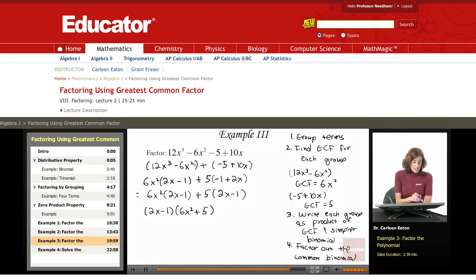So the factorization of this polynomial with four terms was achieved by first grouping the first two and the second two terms, finding the greatest common factor for each pair, and then factoring out the common binomial.